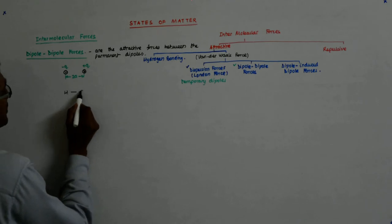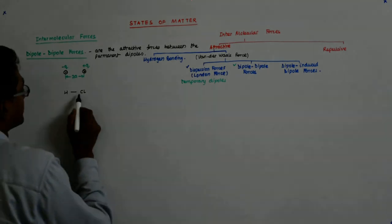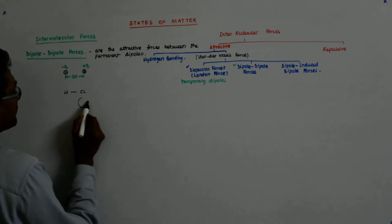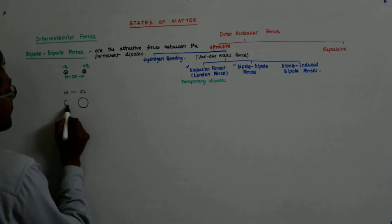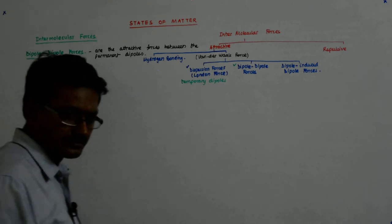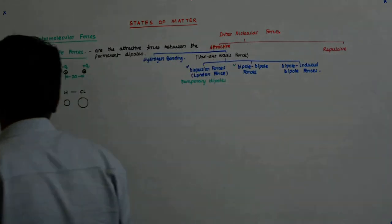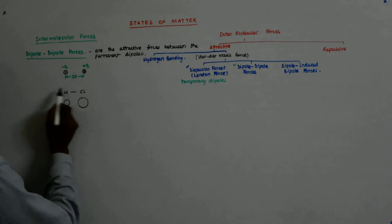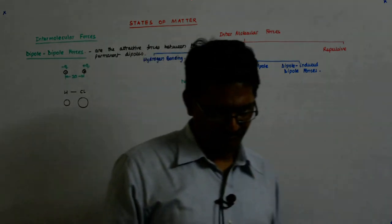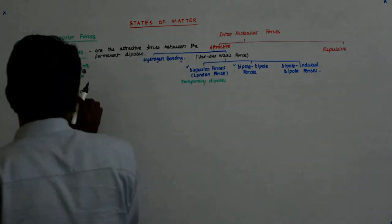Now, how do I get a permanent dipole in chemistry? So, let us say this is H and this is Cl. Cl is a bigger molecule but is highly electronegative. This exerts a pull on H.